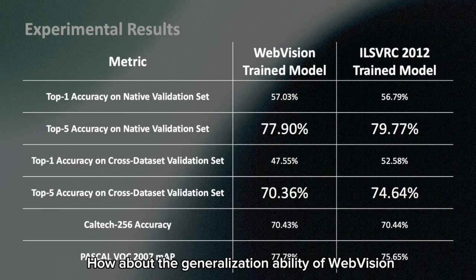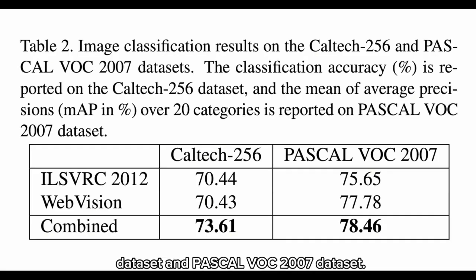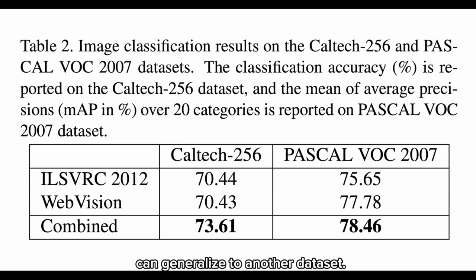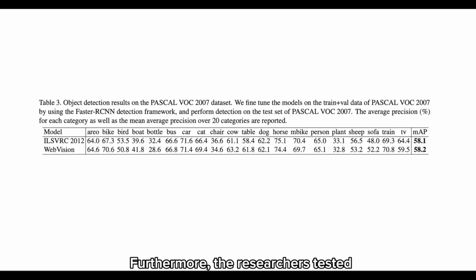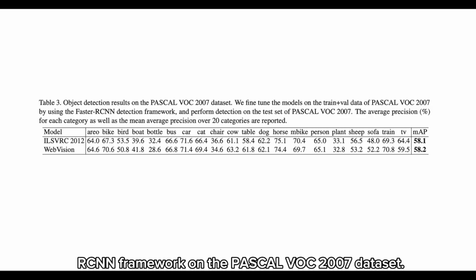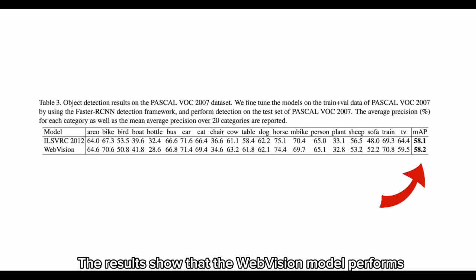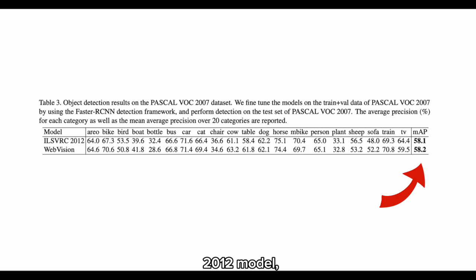Regarding generalization ability, the researchers evaluated the learned feature representation on the Caltech 256 dataset and Pascal VOC 2007 dataset. The results conclude that representations learned directly from web images can generalize to other datasets as well as, or slightly better than, ImageNet, which is meticulously annotated by humans. Furthermore, the researchers tested the WebVision model's generalization by fine-tuning it for object detection using the Faster R-CNN framework on the Pascal VOC 2007 dataset. The results show that the WebVision model performs comparably to the ILSVRC 2012 model, indicating good generalization ability when fine-tuned for new tasks.